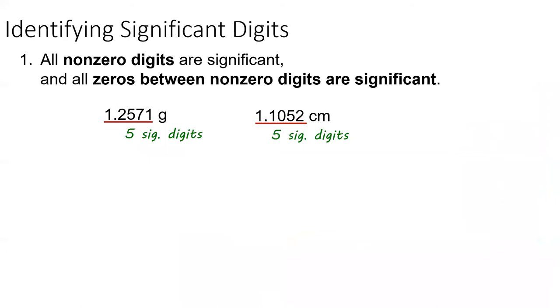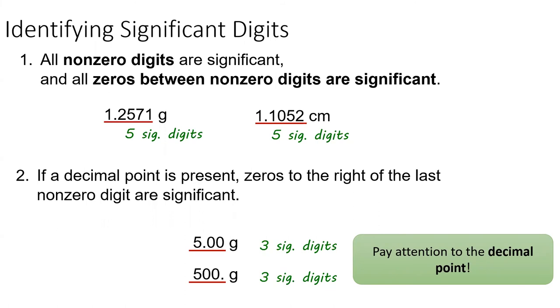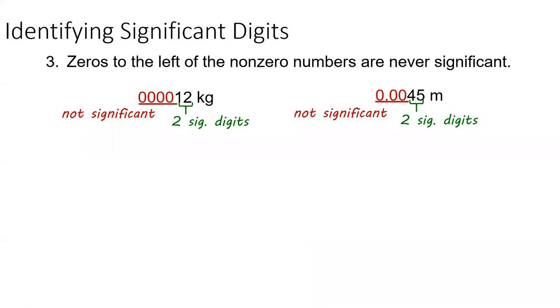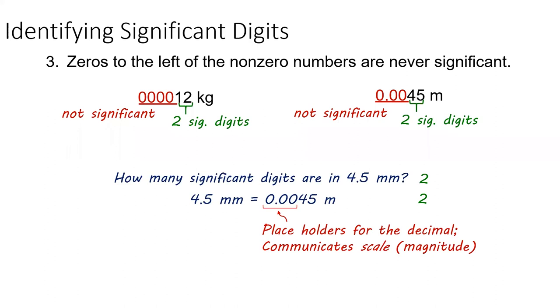Of course, scientists have rules on how to represent sig figs, as we'll show in the next few slides. First, all non-zero digits are always significant, and any zeros sandwiched between non-zero digits are also significant. Pay close attention to decimal points. Any zeros to the right of a non-zero digit are significant if there is a decimal point. Zeros to the left of non-zeros are never significant. Even if there is a decimal, the zeros to the left of the non-zero numbers are not significant. This is because those zeros communicate something else, the scale of the measurement.